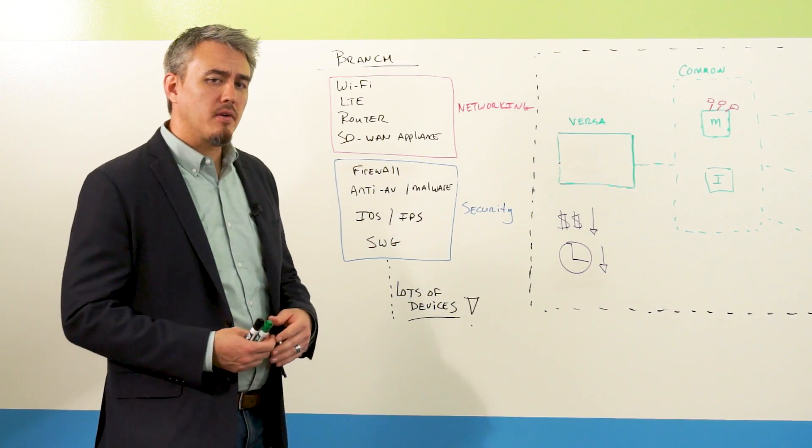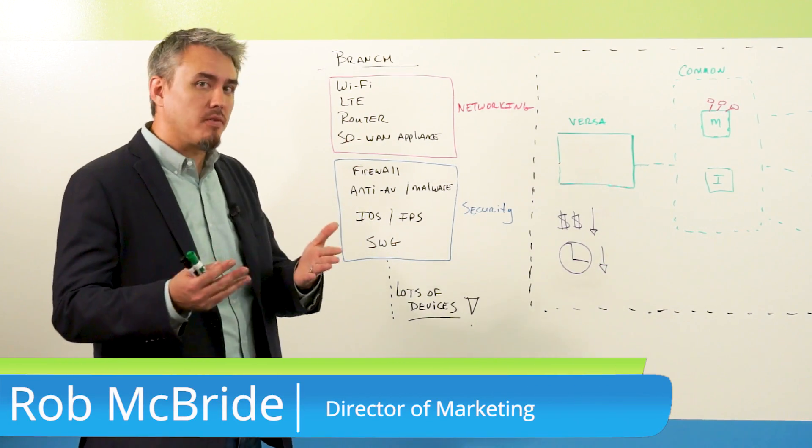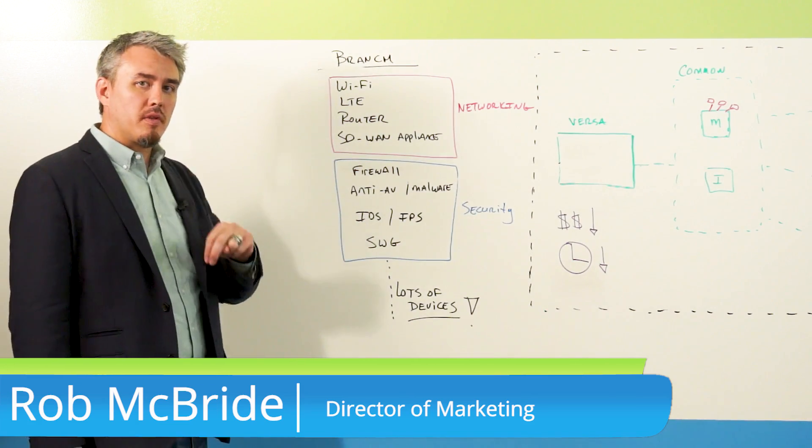First thing we want to do is actually take a look at what's actually in the branch before you even deploy SD-WAN or while you're deploying SD-WAN. So we've categorized them into two things.